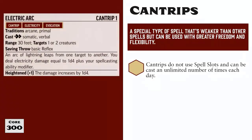Cantrips can be cast at will an unlimited number of times per day. For example, Electric Arc has been a very popular cantrip with my players. Cantrips have minimum casting levels, just like regular spells, although the majority of cantrips are first level. Since this is a cantrip, it can be cast an unlimited number of times each day and does not consume any spell slots.